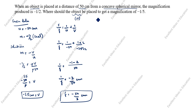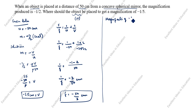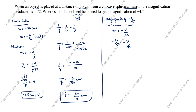Now we will calculate for a magnification of minus 1 by 5. Using m is equal to minus v by u, with m equal to minus 1 by 5, the minus signs cancel, giving u by 5 is equal to v. So v is equal to u by 5 centimeters.